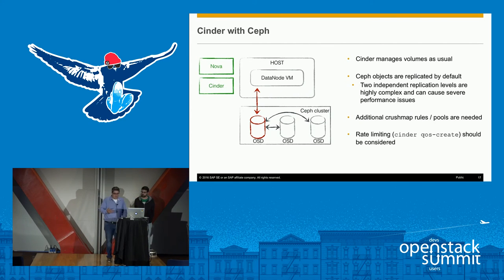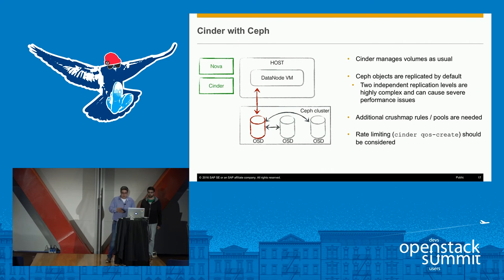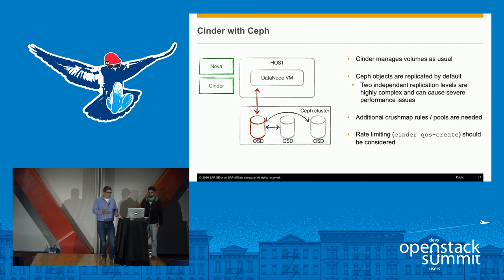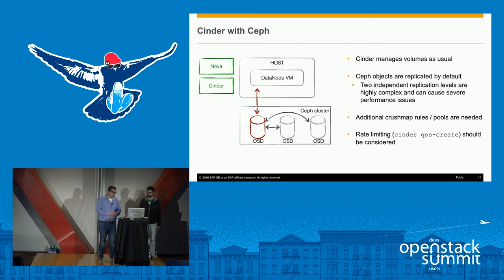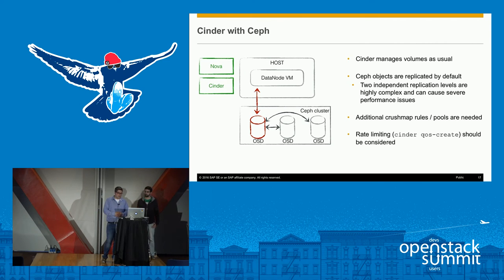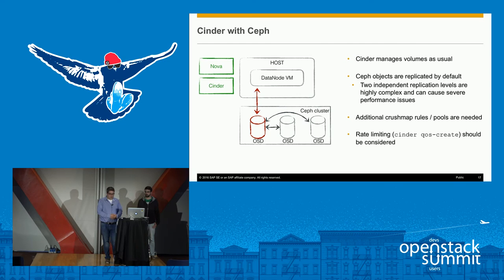Yeah, it looks really nice on the surface, but having a more detailed look we will face issues. As Daniel already mentioned, one issue is replication. One easier solution would be to switch the Ceph replication level to one — then you have three-times replication in the data nodes and just one in Ceph. But this causes the issue that you have a much bigger failure domain because the data is not replicated at the Ceph level, so if one disk fails you could have data loss. Basically, you have to consider what the right replication level is in both systems.